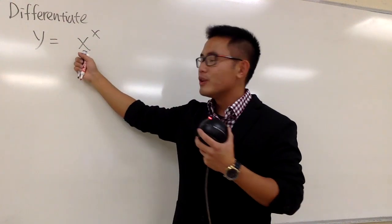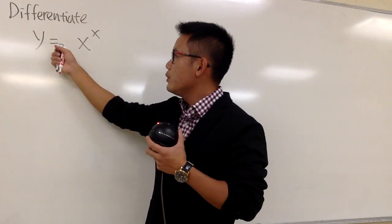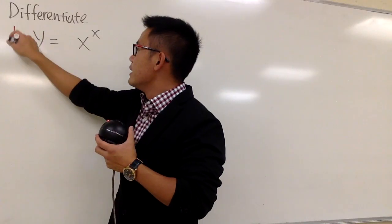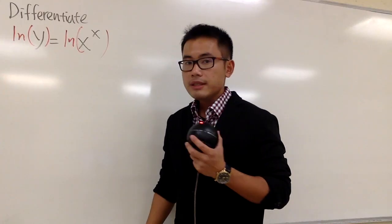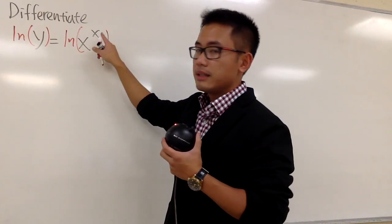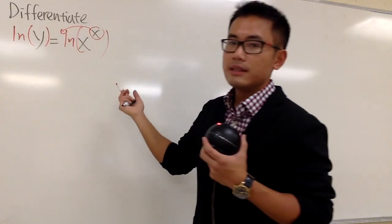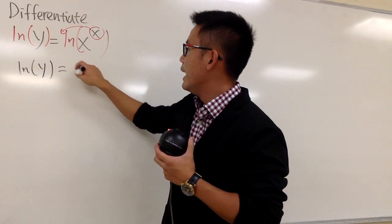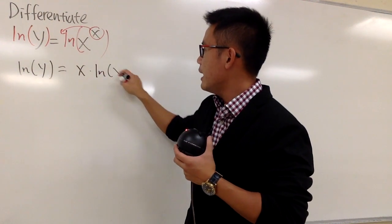Whenever we have a function to a function, this is what we can do. We write it down as y equal x to the x, and then we take the natural log of both sides. The reason is because now on this side, x to the x — this is the power x right here — we can take this to the front. So we have ln y equal to x in the front, and we multiply by ln x.